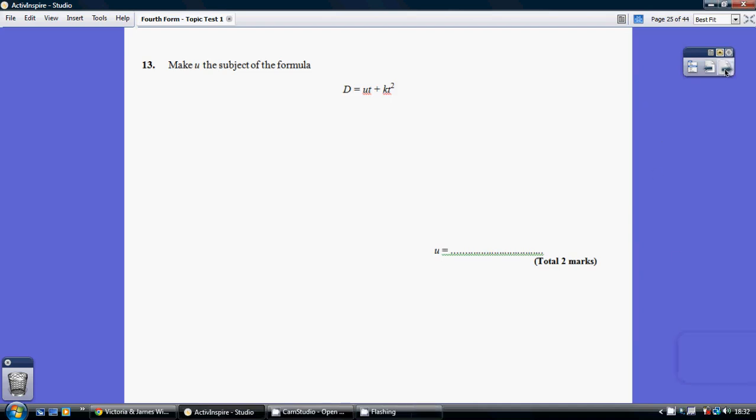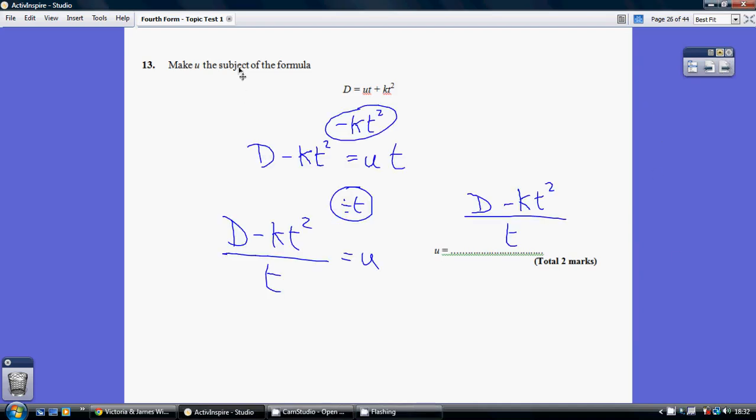Question 13. Don't overcomplicate this. We need to make u the subject, and u is part of this term here. So we need to undo this term - undo the whole of the term. How do you undo an adding of kt squared? We just minus kt squared.